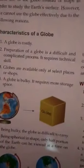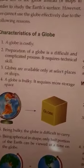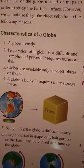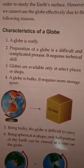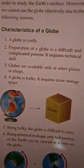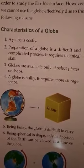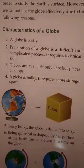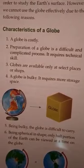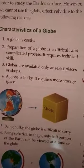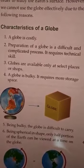Why is a globe so useful? The reason is that it resembles the accurate shape of the earth. By seeing a globe you can understand how the earth looks, where the oceans are, and where the continents are located. The correct position of all the land masses and water bodies can be clearly seen using a globe.